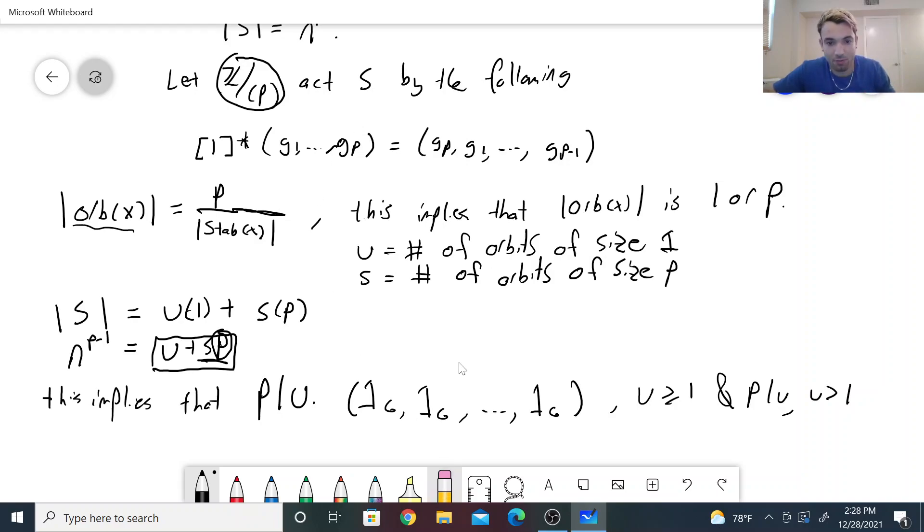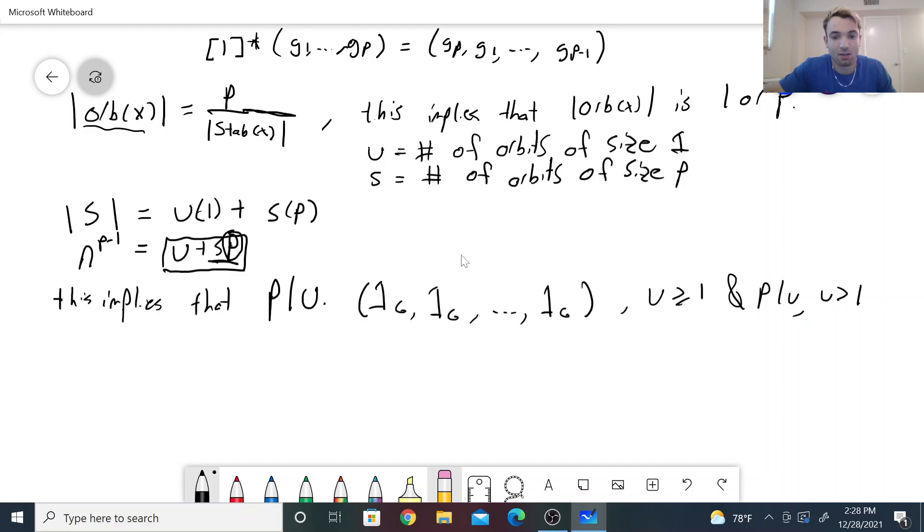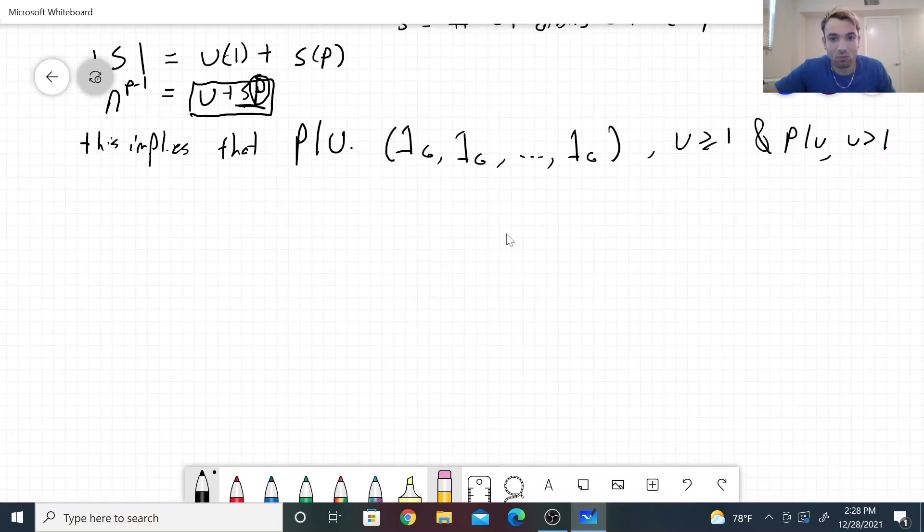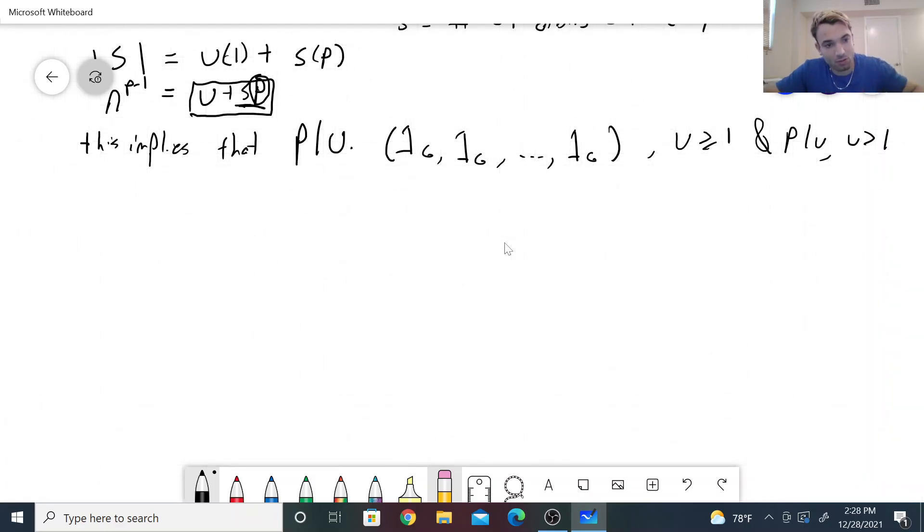So from that, we know we can, we know there exists at least another element, there exists another orbit of size 1. So what does that look like? So say this element of S, (g_1, ..., g_p), has an orbit of size 1.